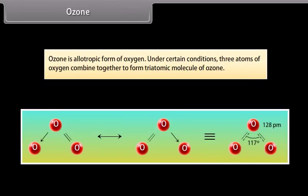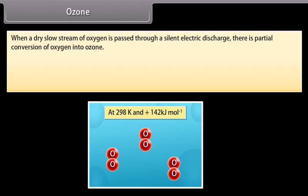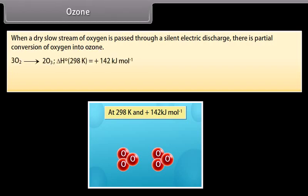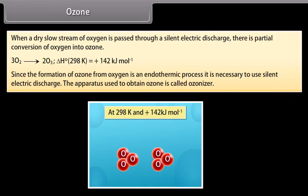Ozone. Ozone is an allotropic form of oxygen. Under certain conditions, three atoms of oxygen combine together to form a triatomic molecule of ozone. When a dry slow stream of oxygen is passed through a silent electric discharge, there is partial conversion of oxygen into ozone. Since the formation of ozone from oxygen is an endothermic process, it is necessary to use silent electric discharge. The apparatus used to obtain ozone is called ozonizer.